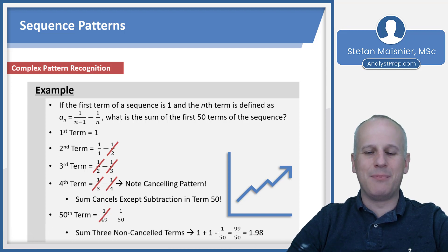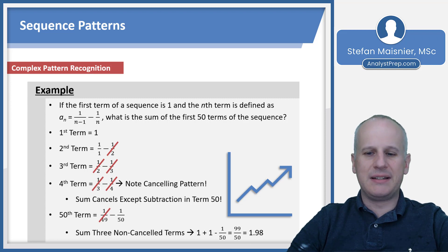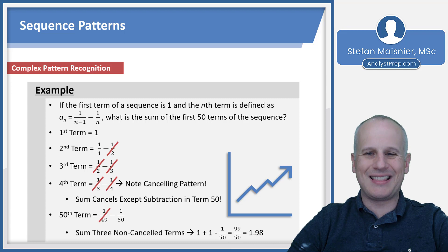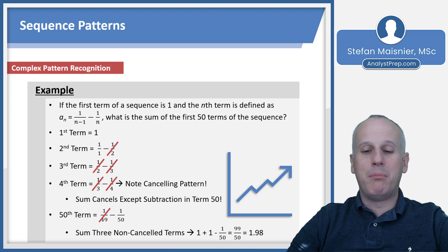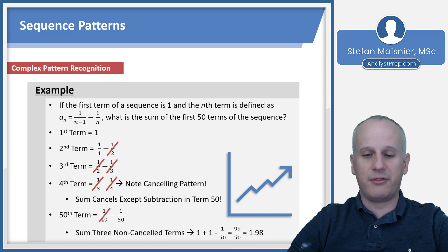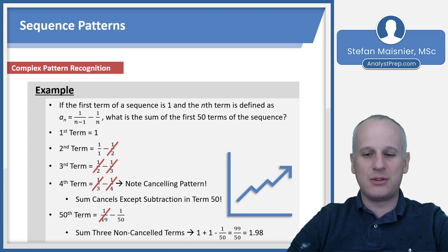The 50th term is 1 over 49 minus 1 over 50. Everything cancels from minus 1/4 up to positive 1/49, except the minus 1/50 because we don't reach a next term after 50 to cancel that negative. So we sum the three non-canceled terms: the first term 1, plus the 1 over 1 from the second term, minus 1/50 at the end. That gives 1 plus 1 minus 1/50, or 100/50 minus 1/50, which equals 99/50, or 1.98 in decimal form.